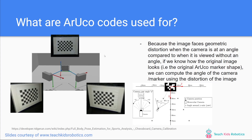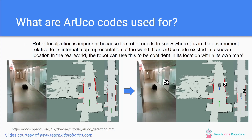Because we know the geometric distortion expected and we know the original image — for example, we know what a checkerboard looks like straight on, or what an ArUco marker looks like straight on — we can use this geometric distortion to calculate the angle at which the camera is looking at the given image. This angle in turn allows us to know where the camera and where the robot is relative to the given ArUco code, which is useful in knowing and localizing a robot.